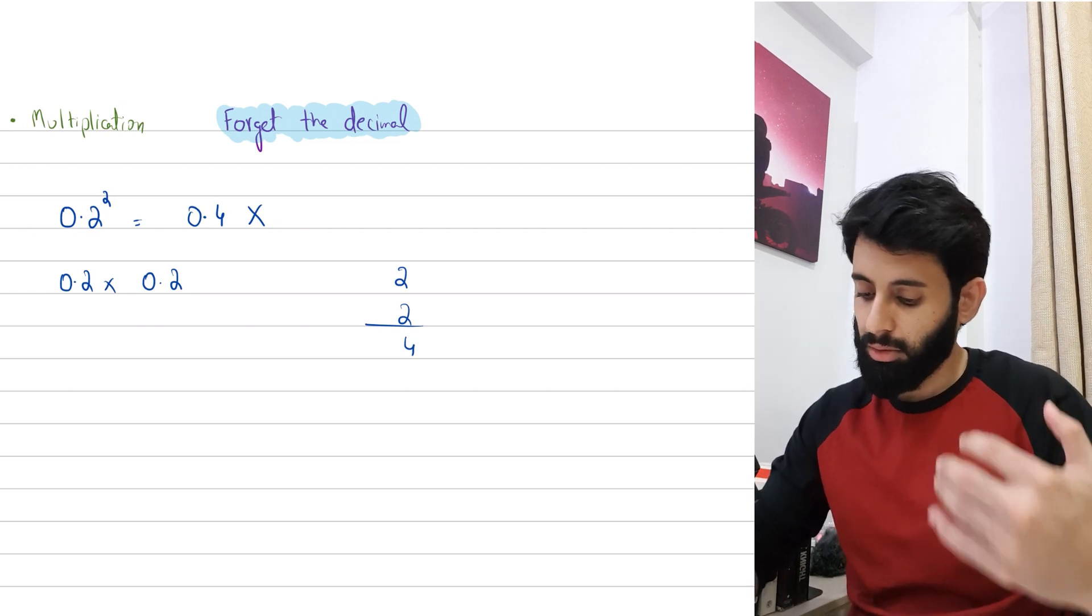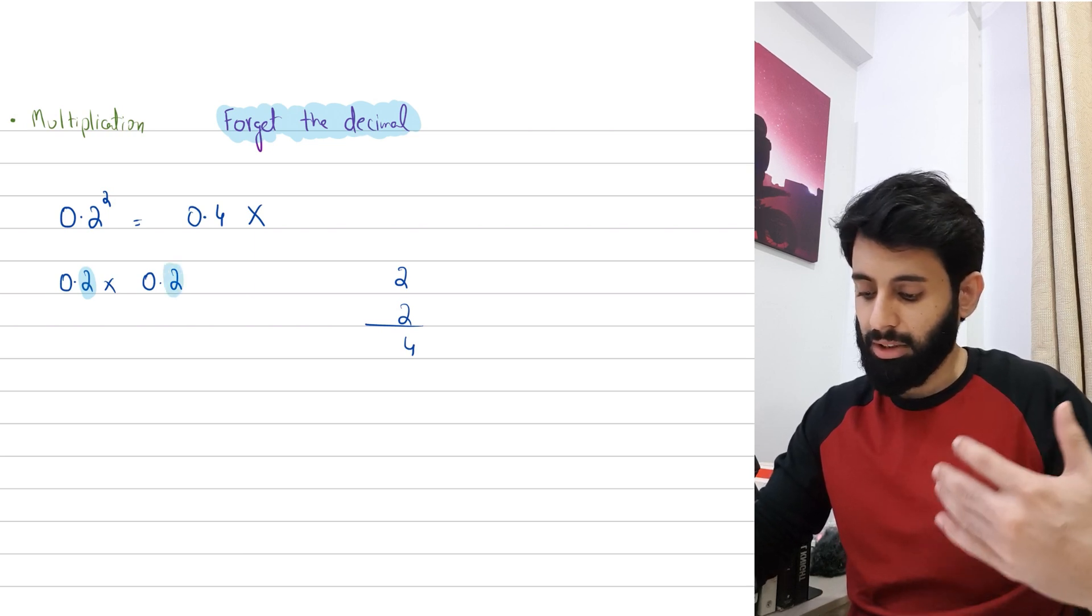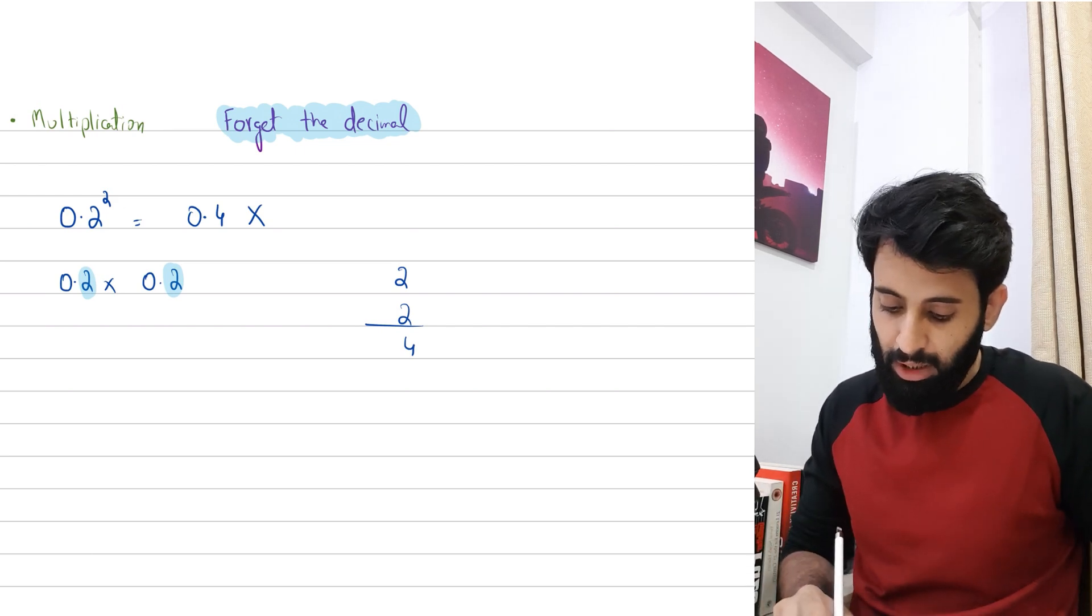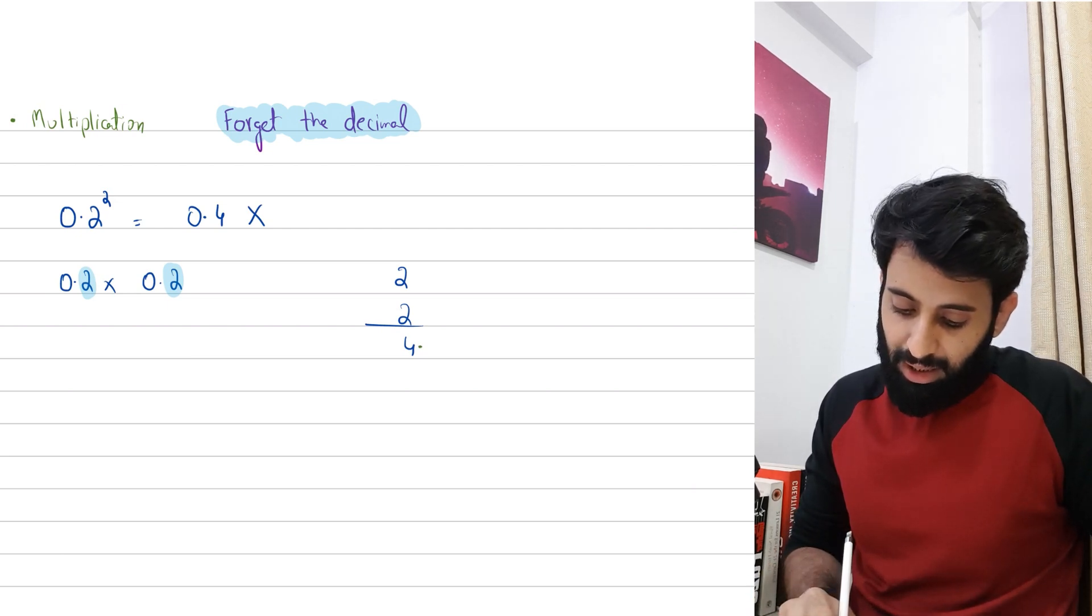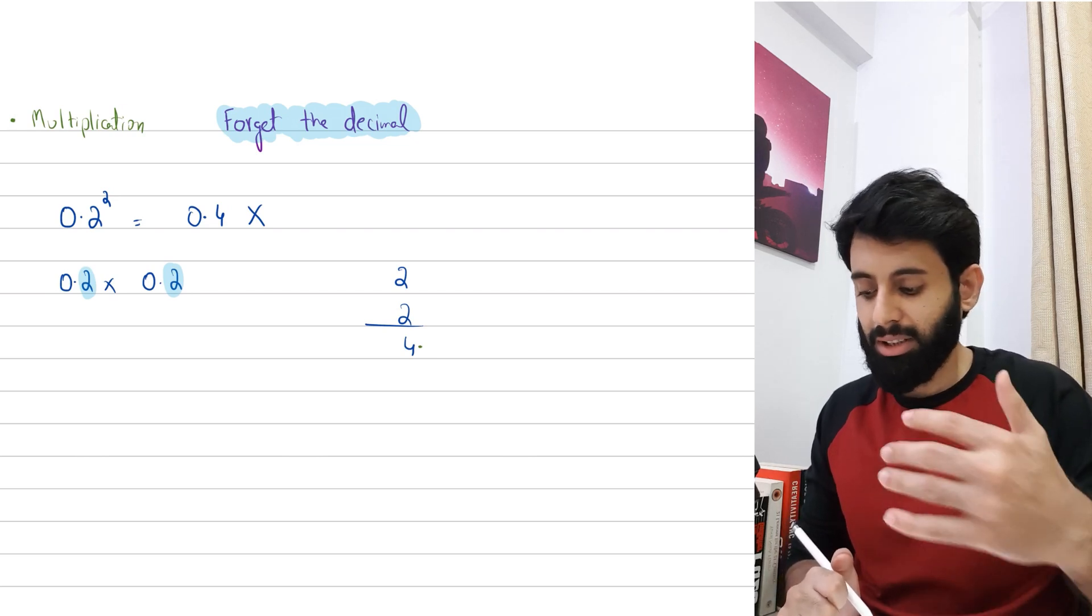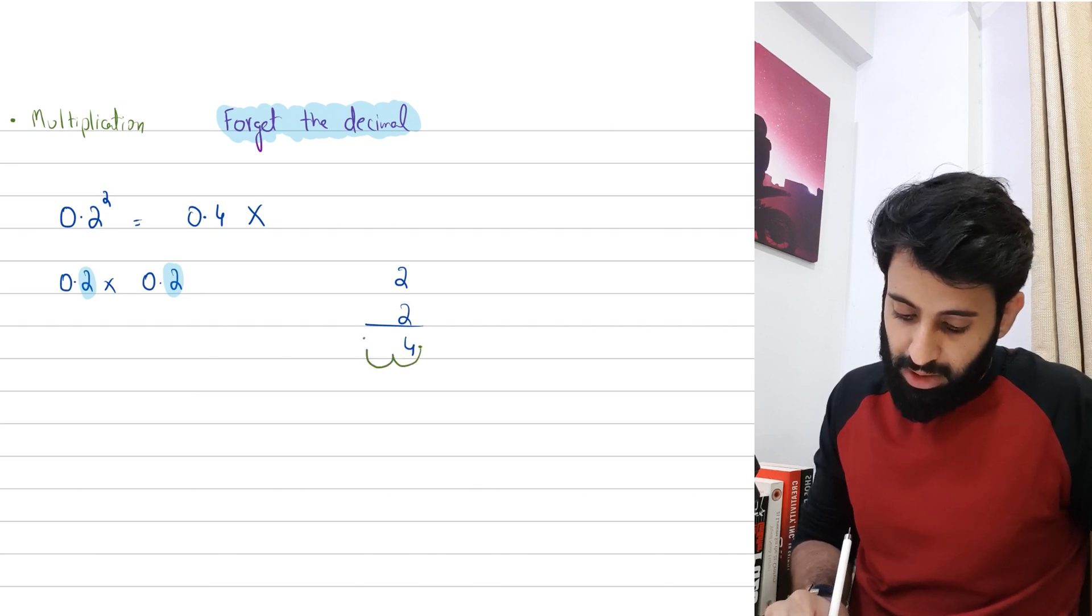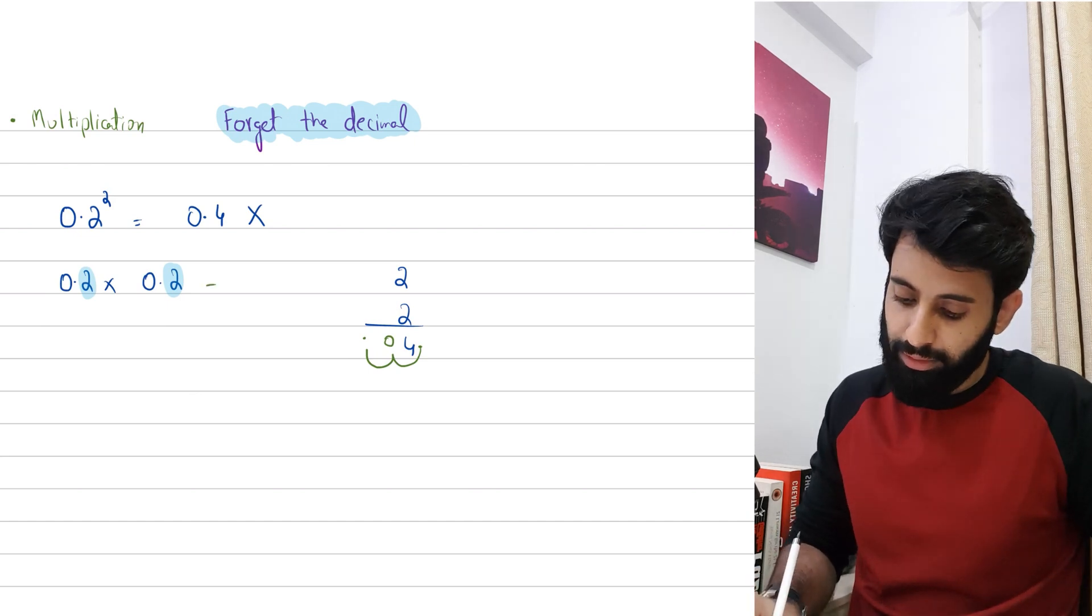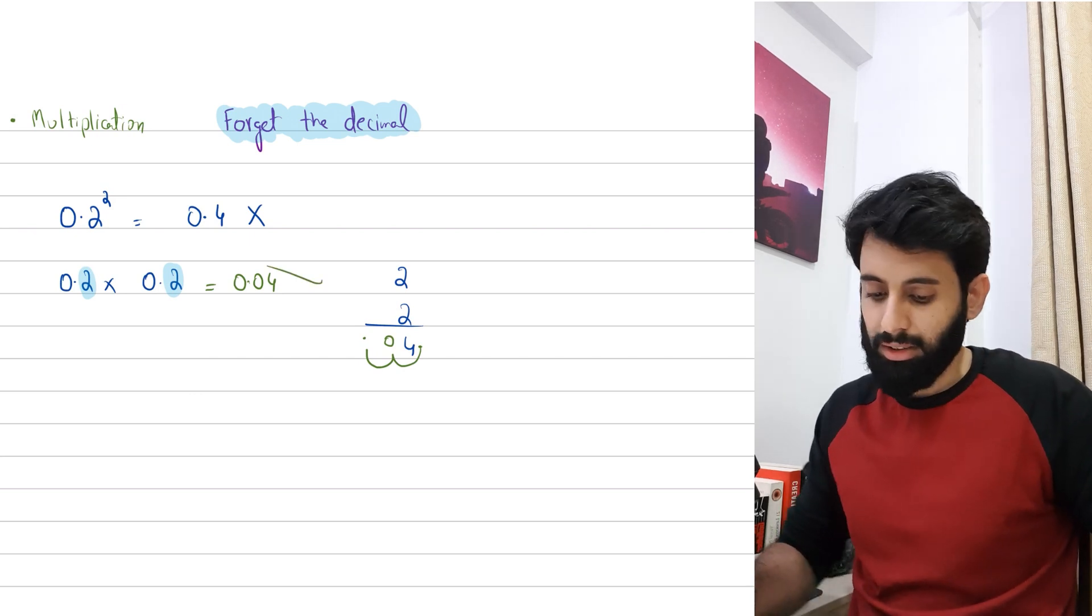Let's see how many decimal places we had in the beginning. All together we had two decimals - one with 0.2 and one with 0.2. So we had a total of two decimals. When I do 2 times 2 I get 4, and now I'm going to take the decimal two places back. Why two places? Because that's the total number of decimal places we had. So 1 and 2, which is why 2 times 2 is not 0.4, in fact it is 0.04, and that is the correct answer.